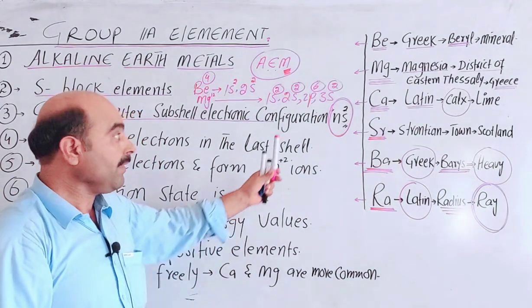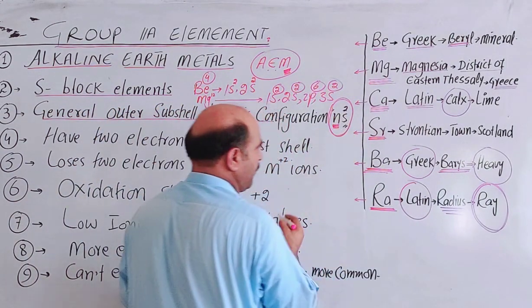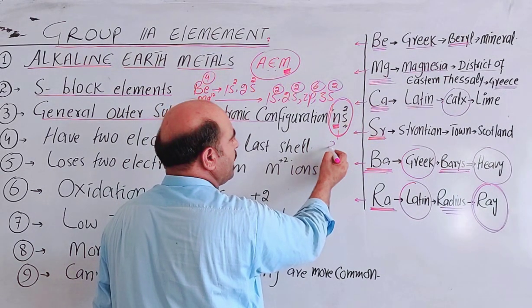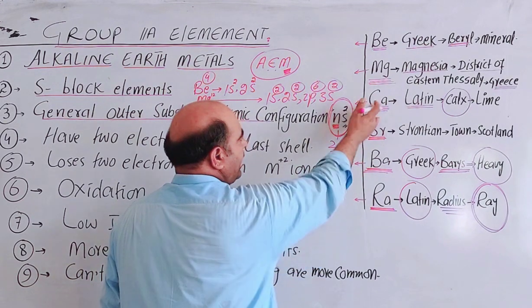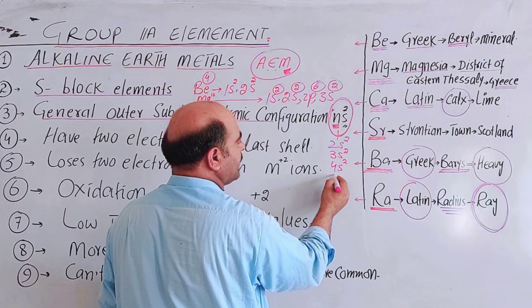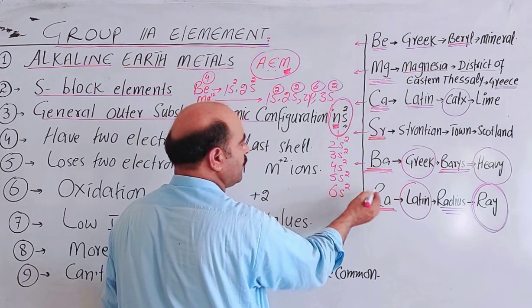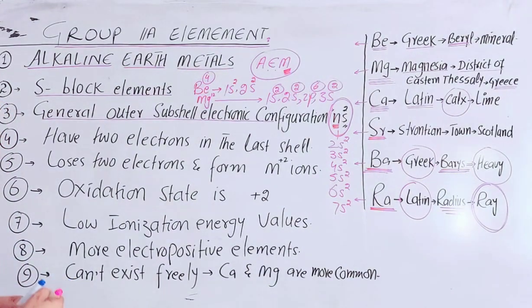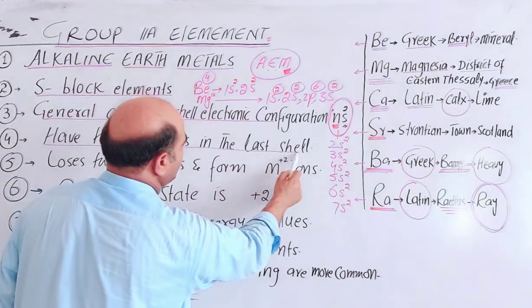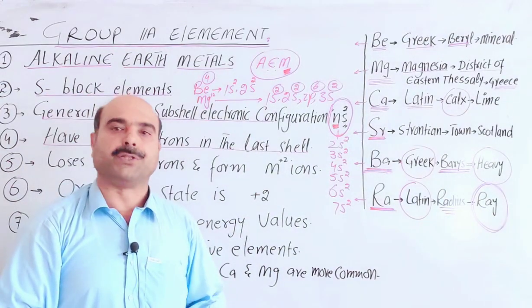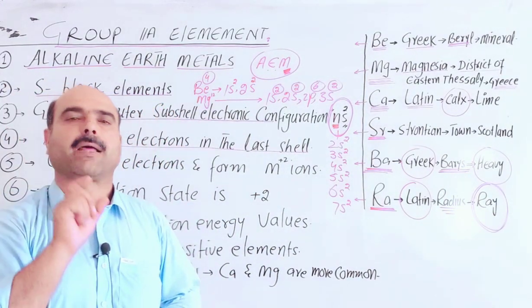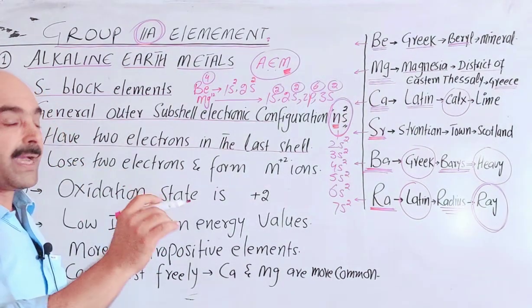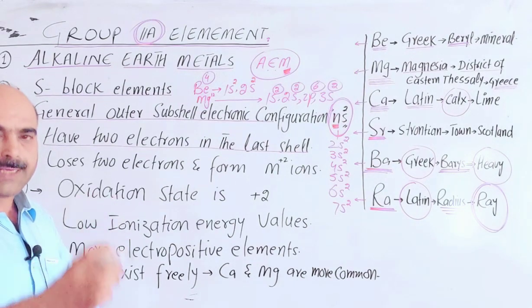In alkaline earth metals, the principal quantum number varies but the S sub-shell has two electrons. In beryllium, shell 2s has two electrons. In magnesium, 3s has two. In calcium, 4s has two. In strontium, 5s has two. In barium, 6s has two. And in radium, 7s has two. Any shell's S sub-shell has two electrons, completing the S sub-shell. They have two electrons in their last shells.